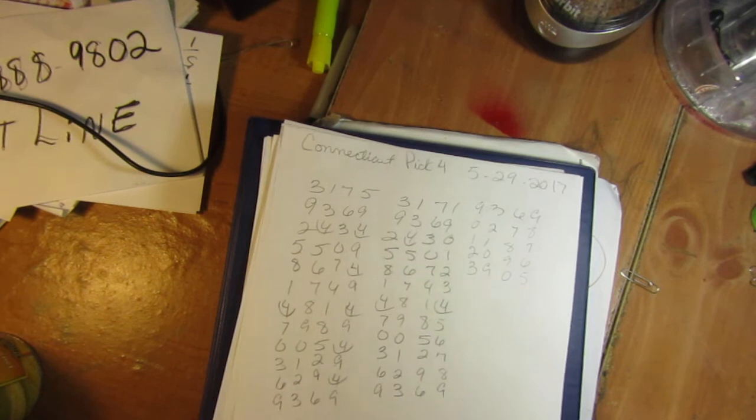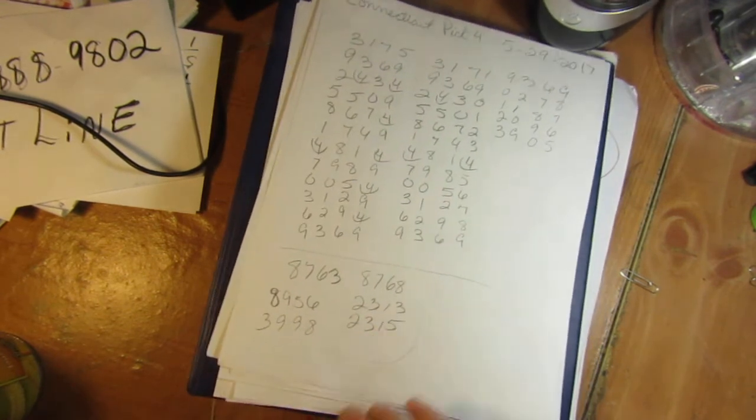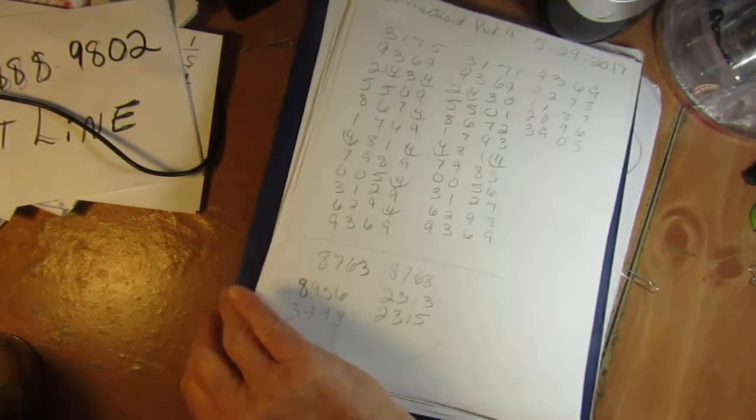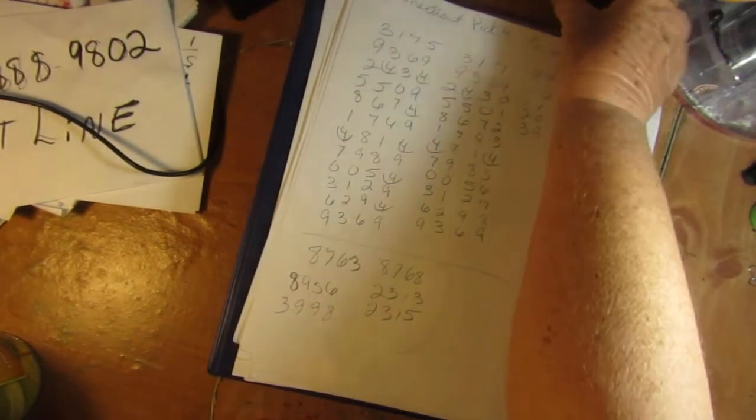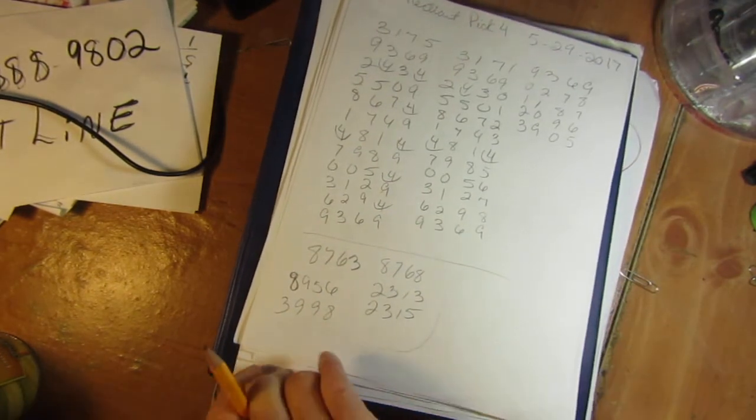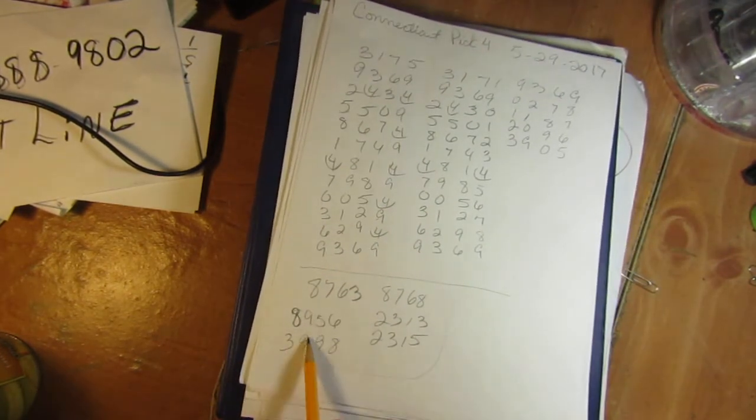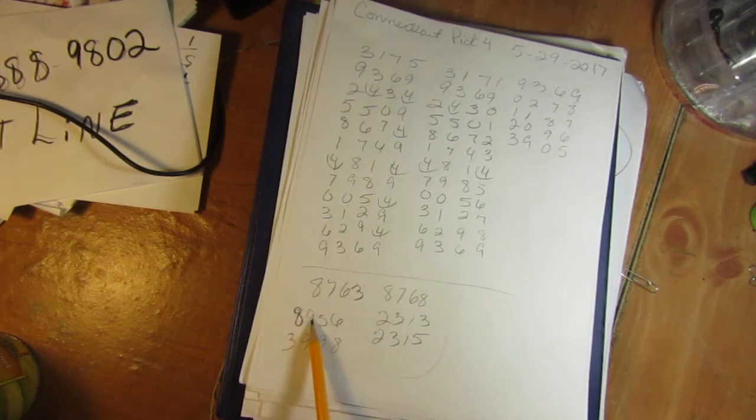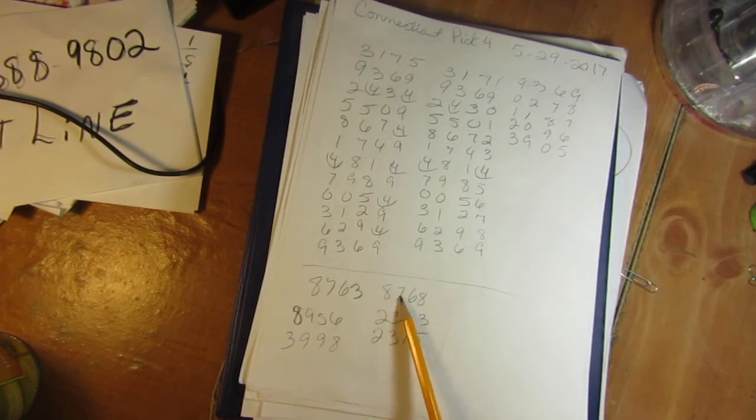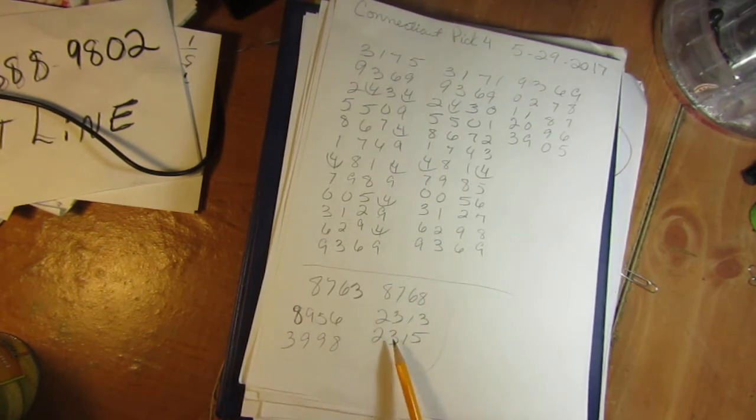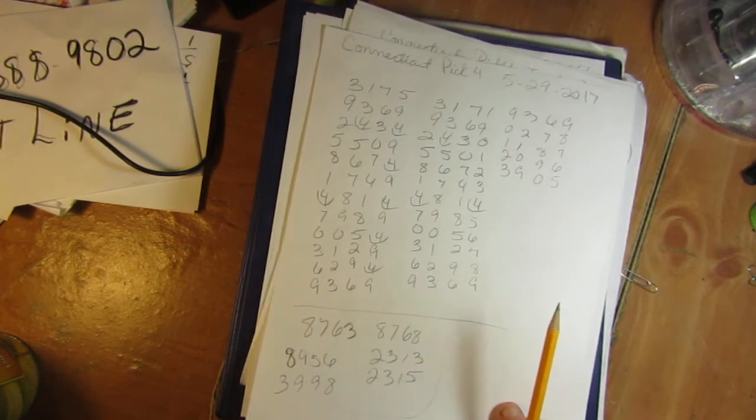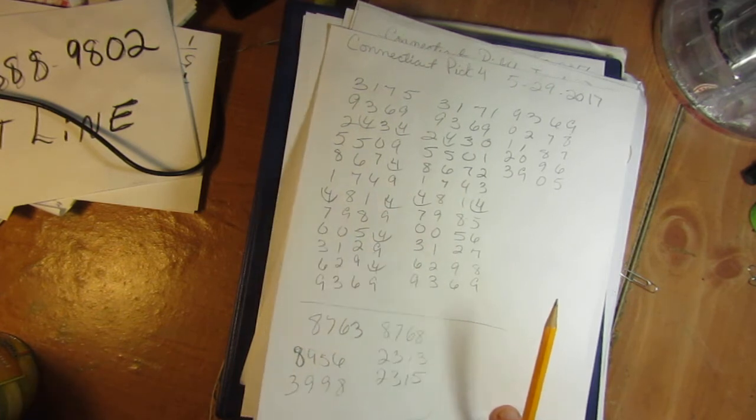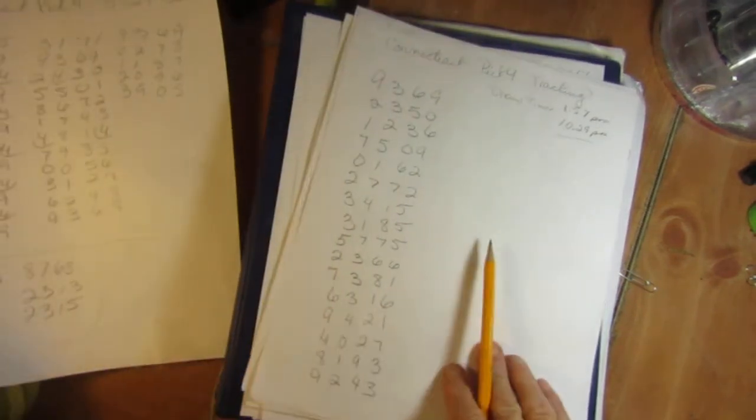When I came up for Pick 4 for tonight, these are the numbers right here: 8-7-6-3, 8-9-5-6, 3-9-9-8, 8-7-6-8, 2-3-1-3, 2-3-1-5. That is for Pick 4 for the state of Connecticut for the evening draw, 5/29/2017.